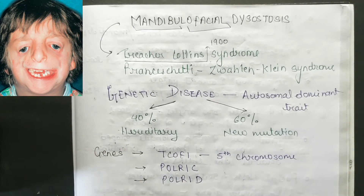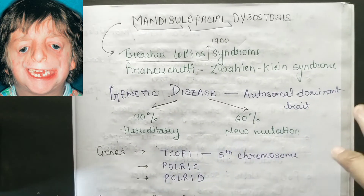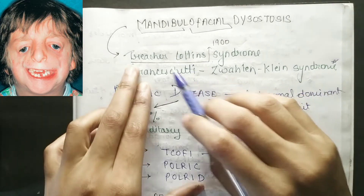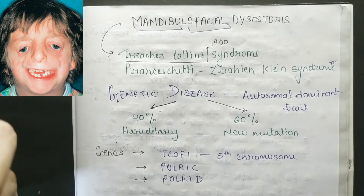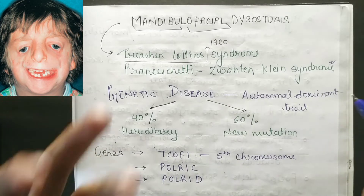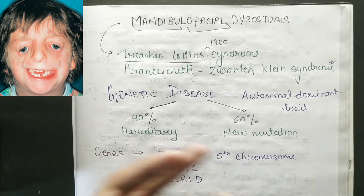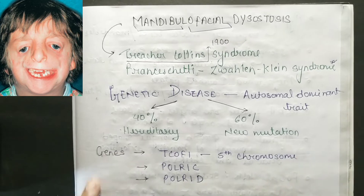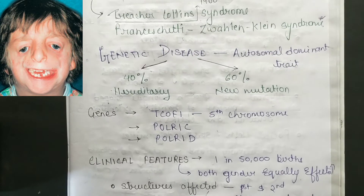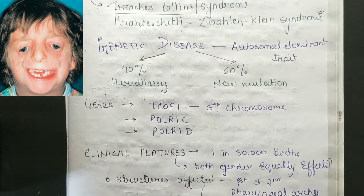Treacher Collins syndrome is a very common topic for viva exams. It is where mandibular facial dysostosis occurs. First of all, it is a genetic disease and an autosomal dominant trait.